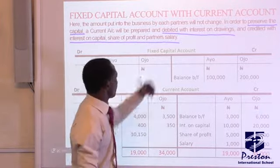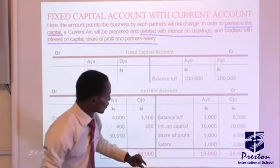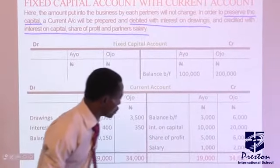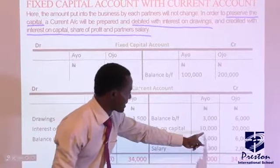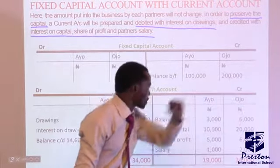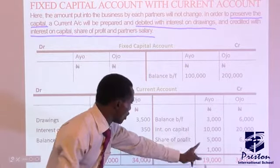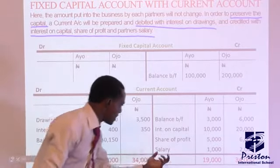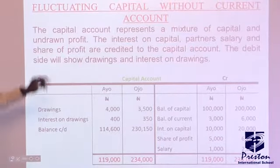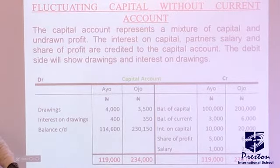This is the fixed capital account — the balance brought forward from the previous period. Now in the current account, we have the balance brought forward, and the interest on capital for each partner. We have two partners here: Ayo and Ojo. The interest on their capital is $10,000 and $20,000 respectively, because Ayo's contribution is $100,000 and Ojo's contribution is $200,000. The share of profit is allocated to Ayo and Ojo respectively, and they are also paid salaries in this range.